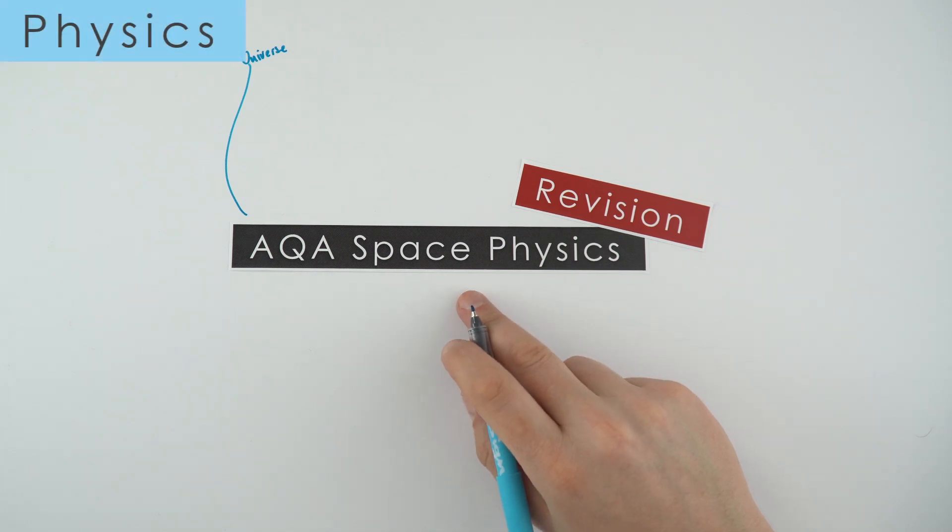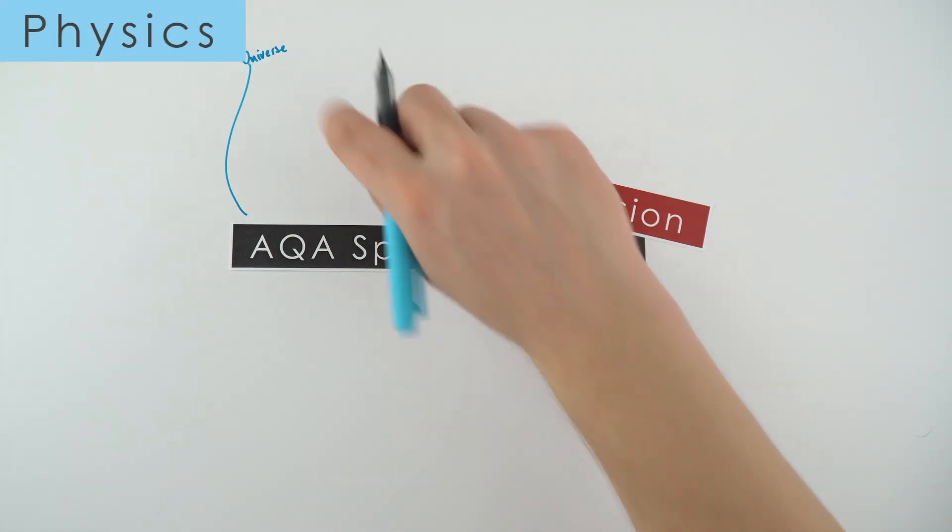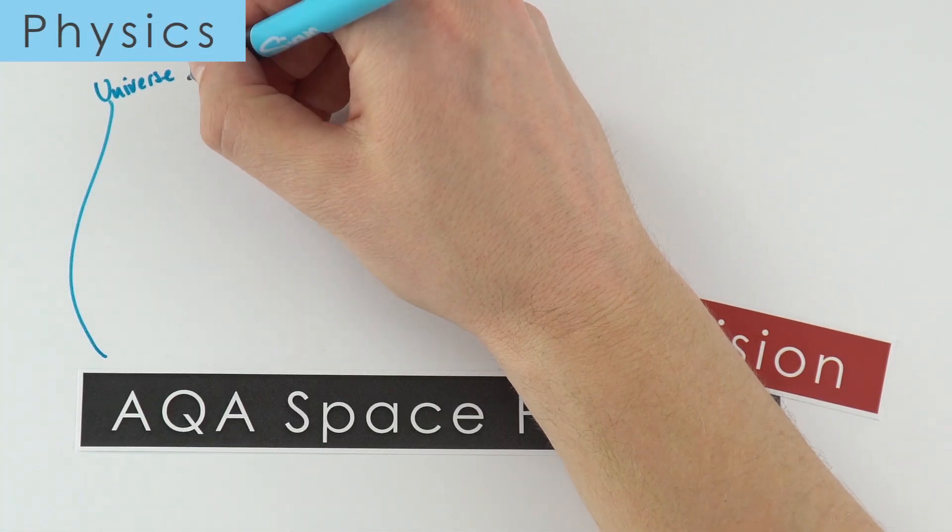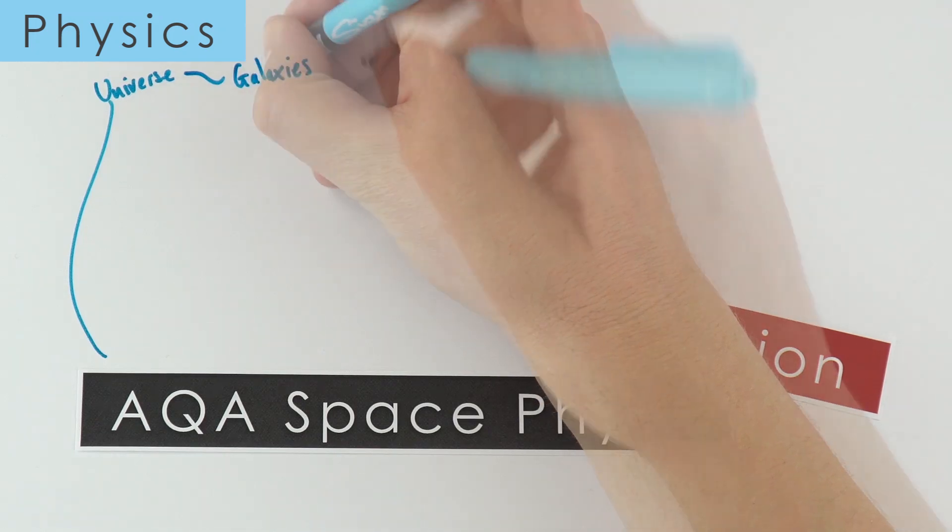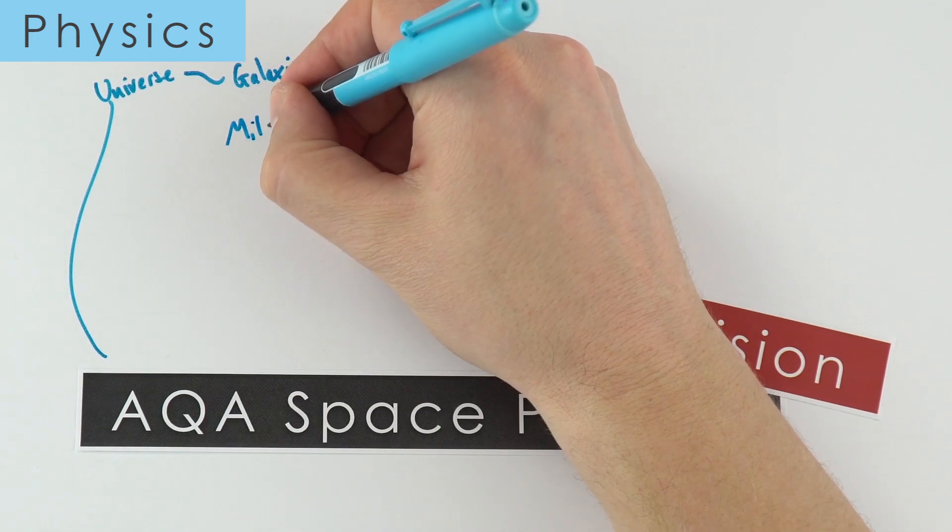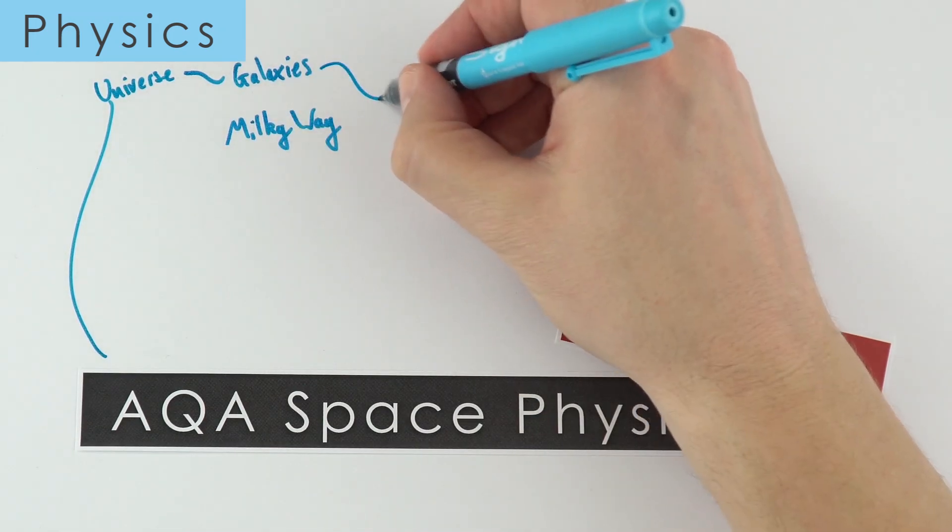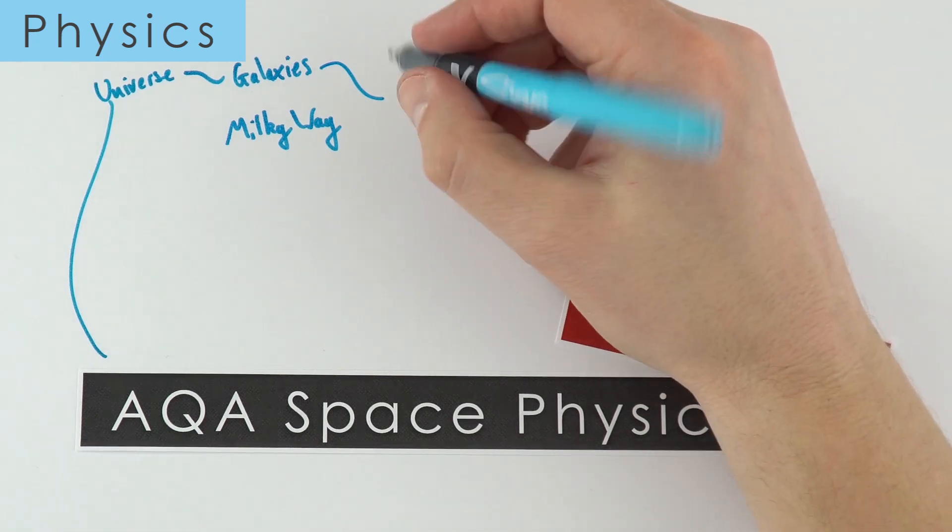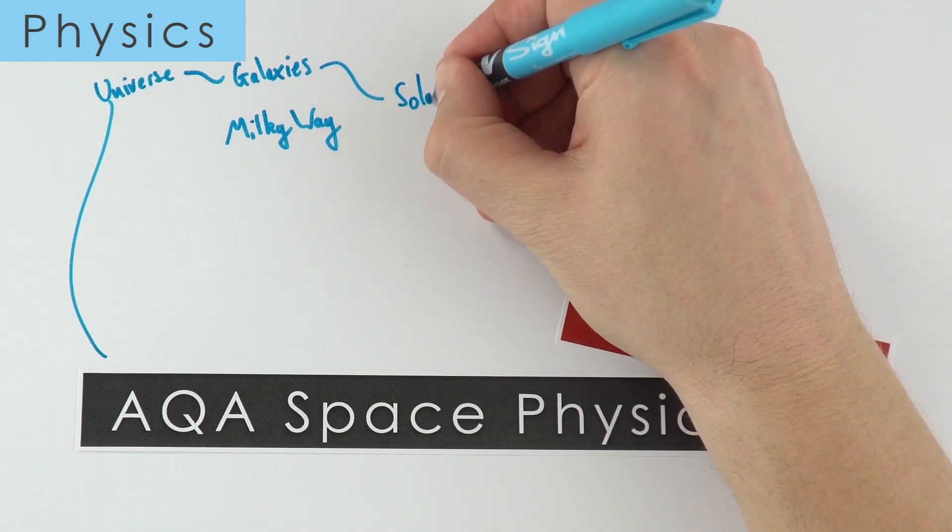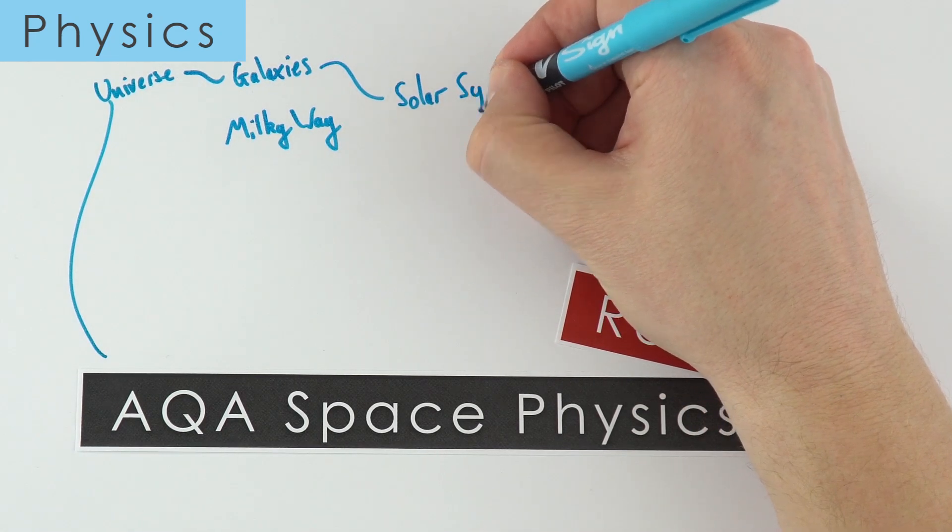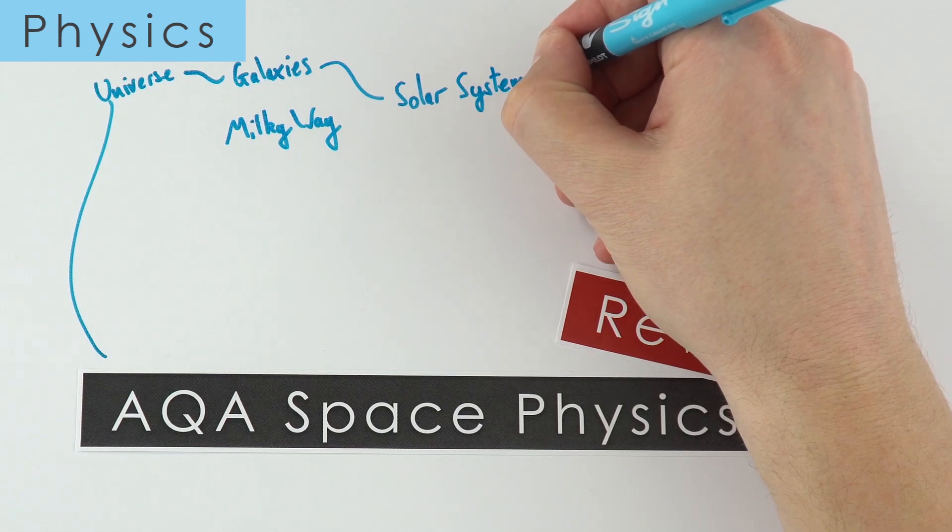So this is revision of the AQA space physics topic. Now in the universe there are hundreds of millions of galaxies and the Milky Way is the one that we're in. In each of these galaxies there are different stars, and what I like to think about is our own solar system which is surrounding our sun.